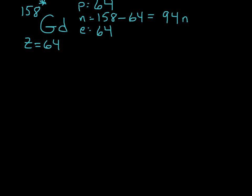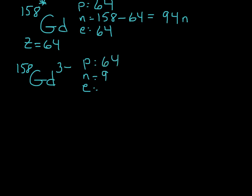Now let's give it a negative charge and compare. I'm going to give it a 3 minus charge. What's going to change? As in the previous example, turning it into an ion doesn't change anything having to do with protons or neutrons — those stay exactly the same. So we still have 64 protons and still have 94 neutrons. The only thing that changes is electrons. We started with 64, and now we have 3 extra — that's where the negative charge comes from. So 64 plus 3: we end up with 67 electrons.